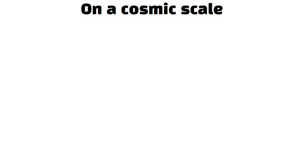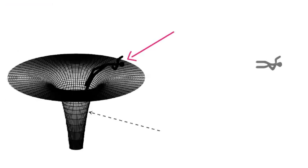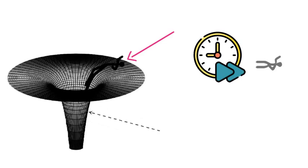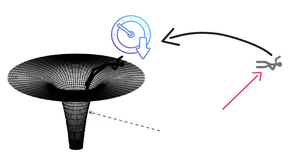On a cosmic scale, the closer you get to an extremely massive object, the more time slows for you compared to a distant observer. Falling toward a black hole, you'd see the outside universe speed forward as your own clock creeps along by comparison. An outside observer, meanwhile, would see you slow down near the event horizon, almost freezing in time.